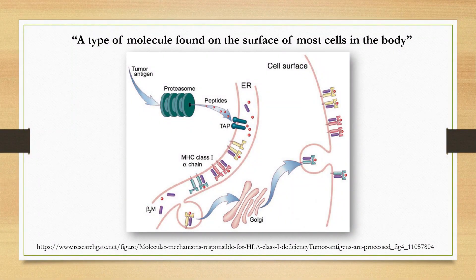Regarding HLA as a molecule found on the surface of most cells: actually, HLA is found in every nucleated cell of the body. Endogenous antigens — a virus or tumor antigens, for example — are processed in the proteasome and generate peptides that are transported by TAP molecules to the endoplasmic reticulum. There, they bind to certain HLA class I heavy chain in association with beta-2 microglobulin. The peptide-HLA complexes are then transported through the Golgi to the cell surface, where we find the HLA molecule attached to its antigen.